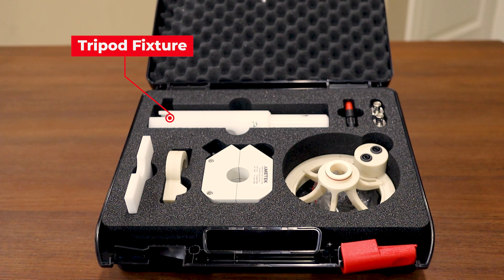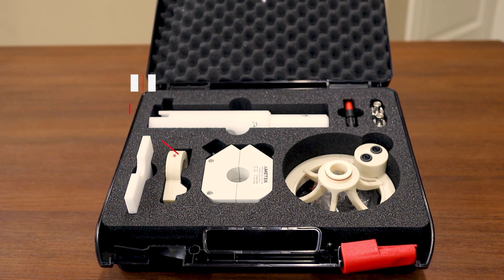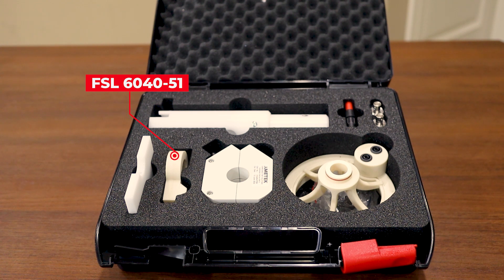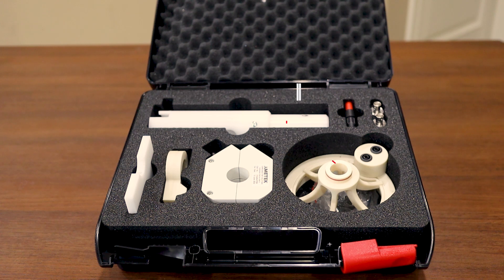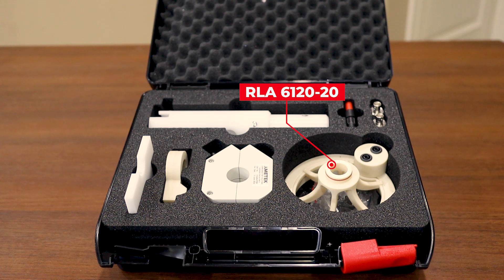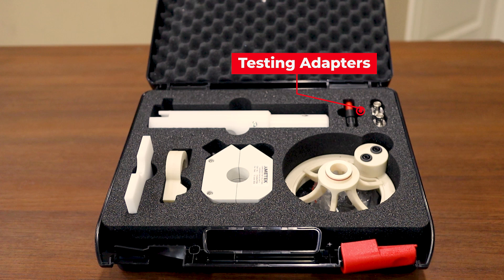Starting in the upper left along the top, we have the tripod fixture. Below that towards the corner we have the radiation area panel. Next to that, the FSL6040-51 loop sensor. To the right of that, the CSP9160A current probe. And then finally on the right we have the spacer and the RLA6120-20 radiating loop antenna. Just above the radiating loop antenna in the upper right corner, we also have a few adapters that are used in testing.